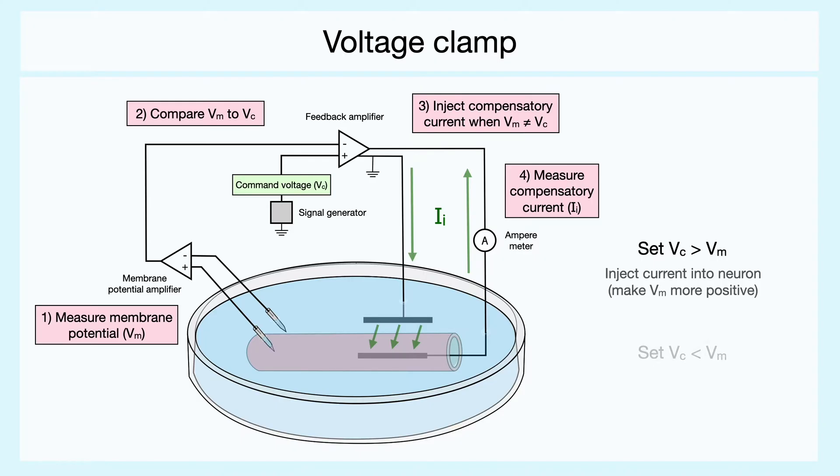In the other scenario, where we set the command voltage lower than the membrane potential, then the membrane potential will have to get more negative to match the command voltage, which is accomplished by withdrawing current from the system. Hence, the apparatus continuously provides a negative feedback loop that keeps the membrane potential at the same value as the command voltage.